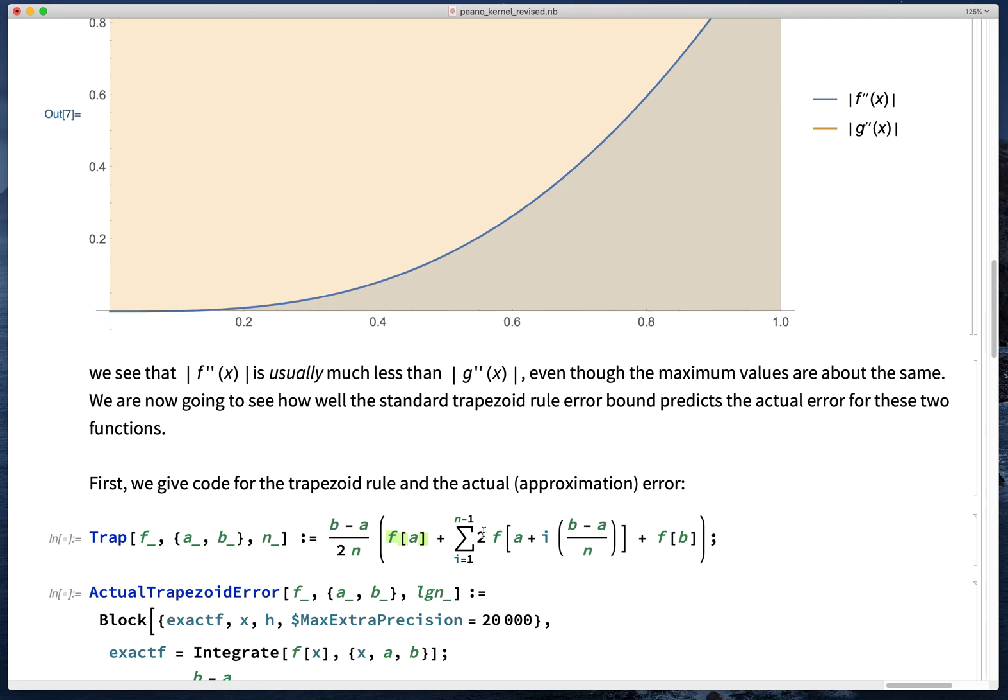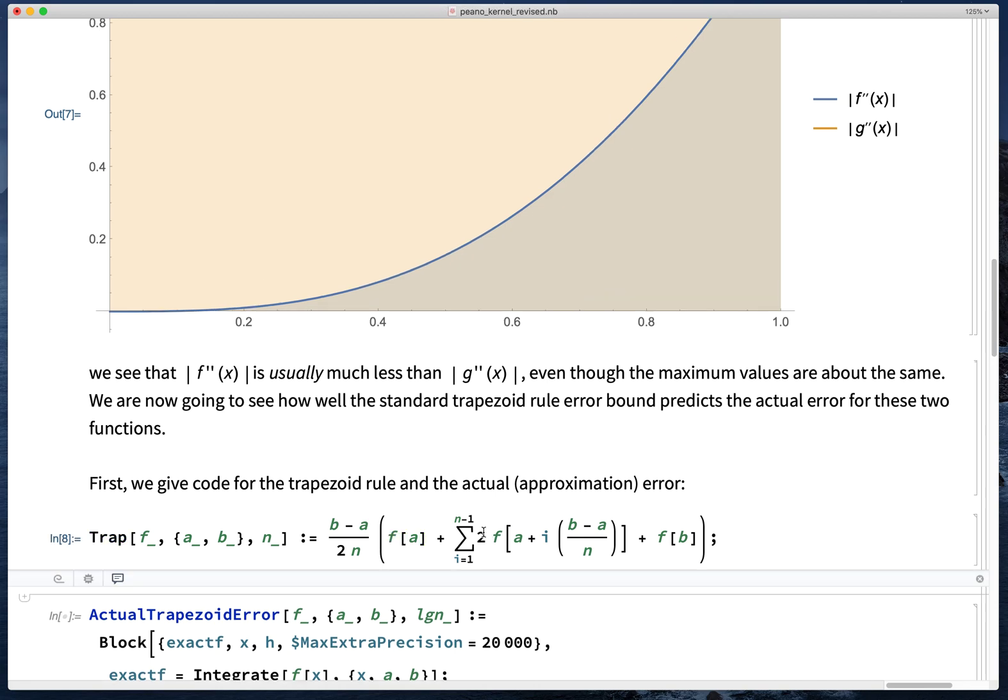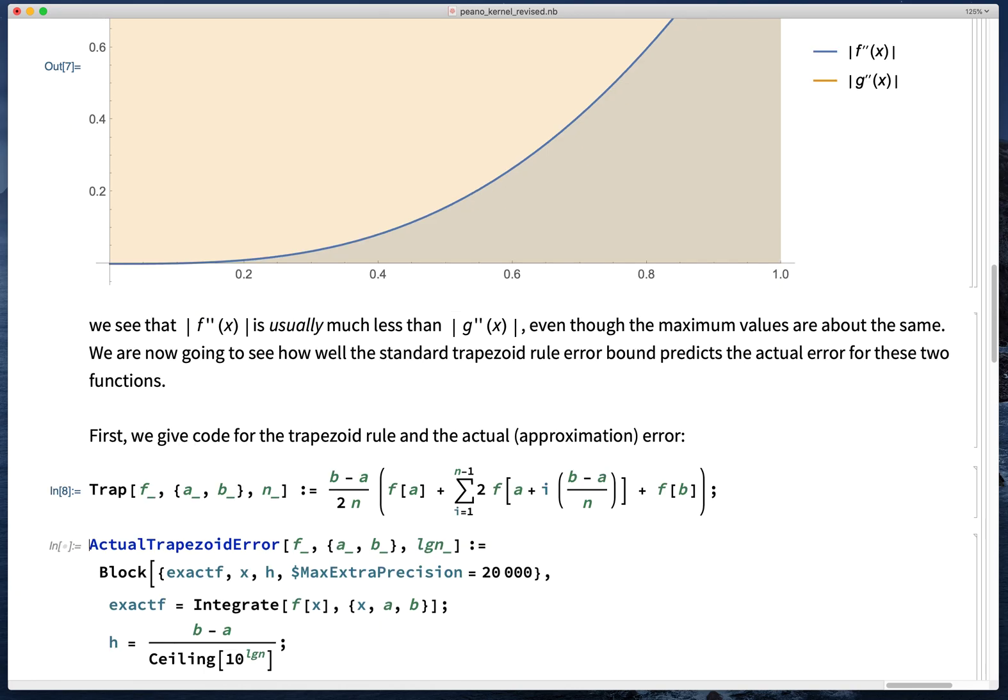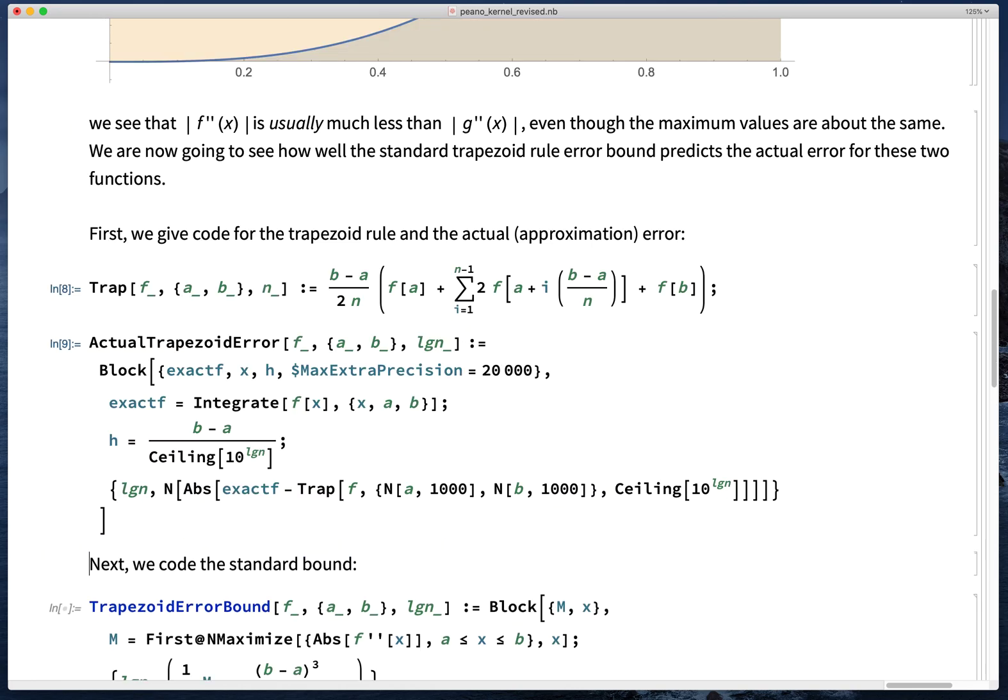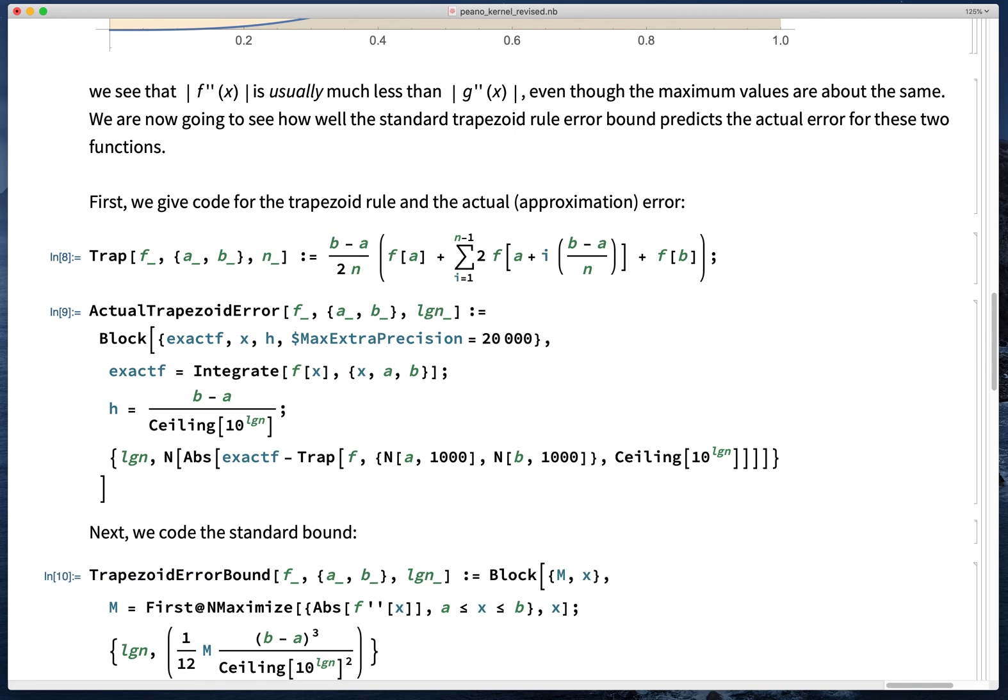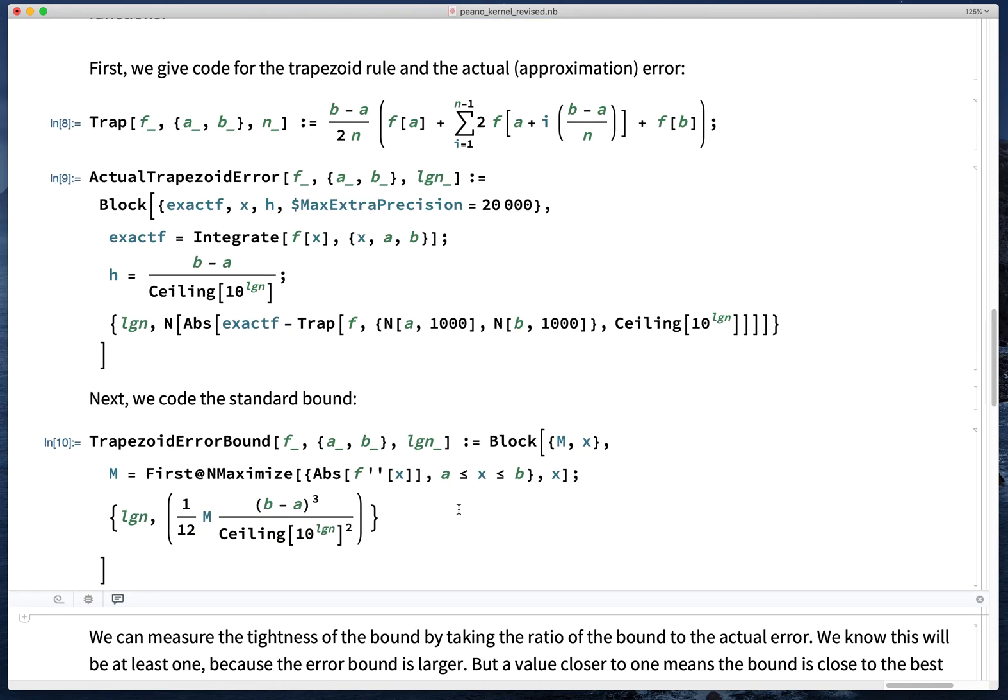So let's check. We're going to code the trapezoid rule as we usually do. We're going to compute the error without roundoff contributions by doing it in an absurd number of digits. And we're going to write down the standard bound. So M is the bound we get from maximizing the absolute value of the second derivative, and we're going to return log(n) and 1/12 times the bound times (b-a)³ over the number of subdivisions squared.